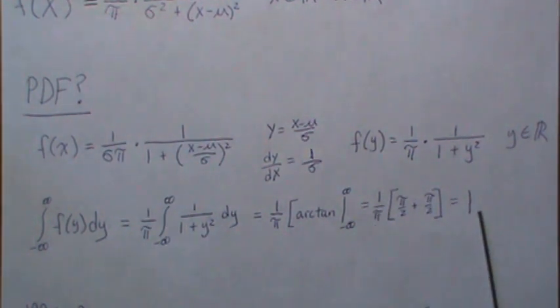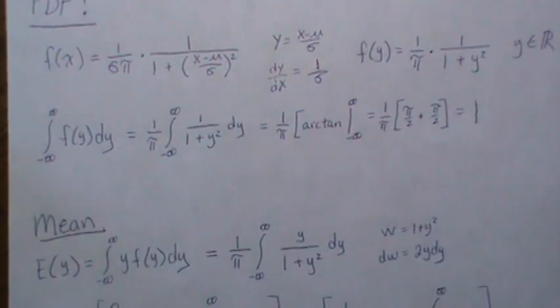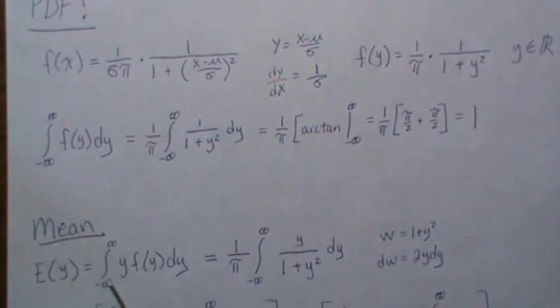Now to find the mean you stick in a y and then integrate over all possible values, and then we're left with this. But let's do a variable change. Let's say w equals 1 plus y squared, dw is 2y dy. Actually before we do this, let's wait a second on that.